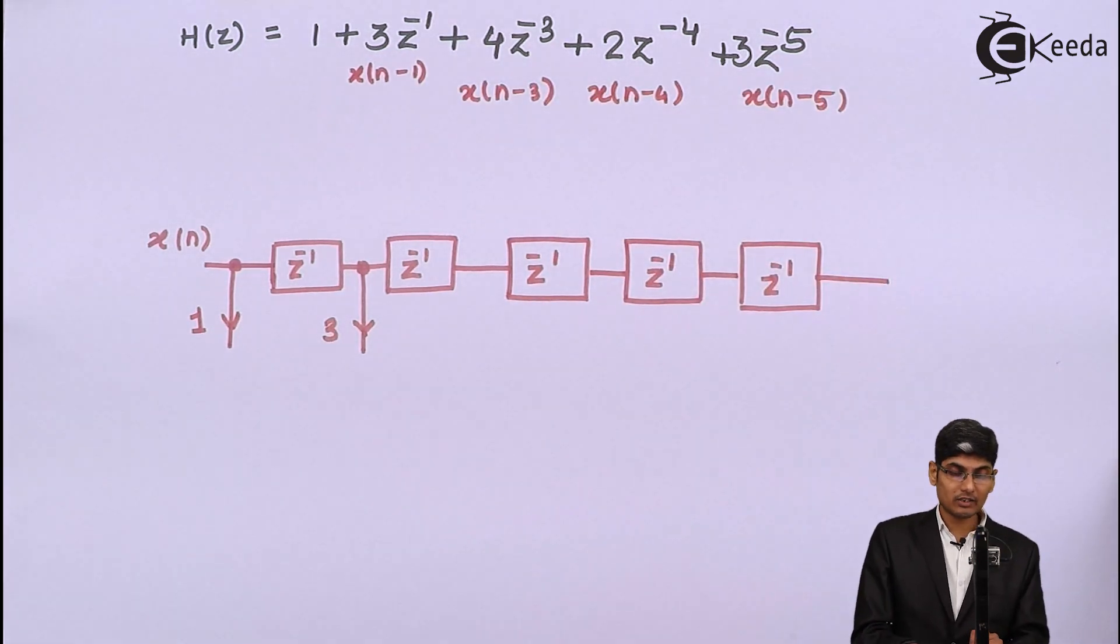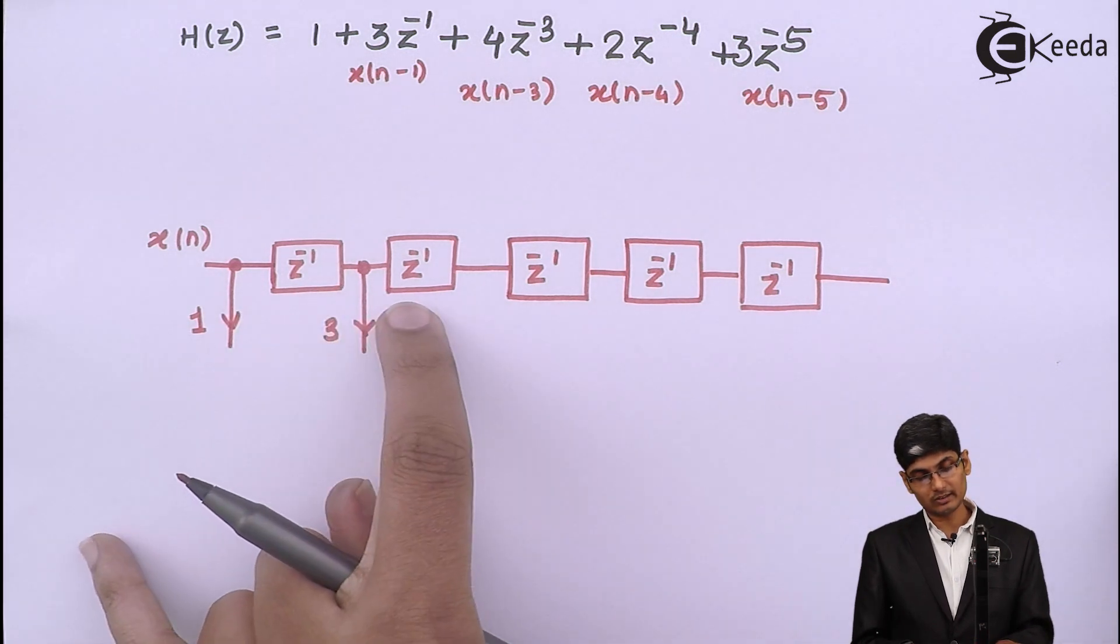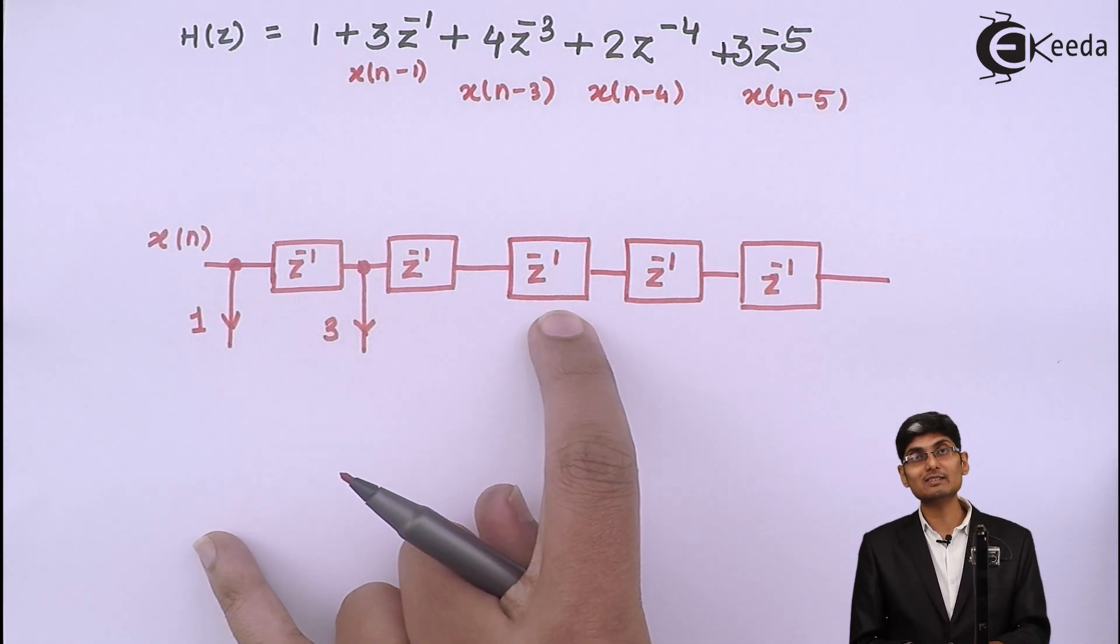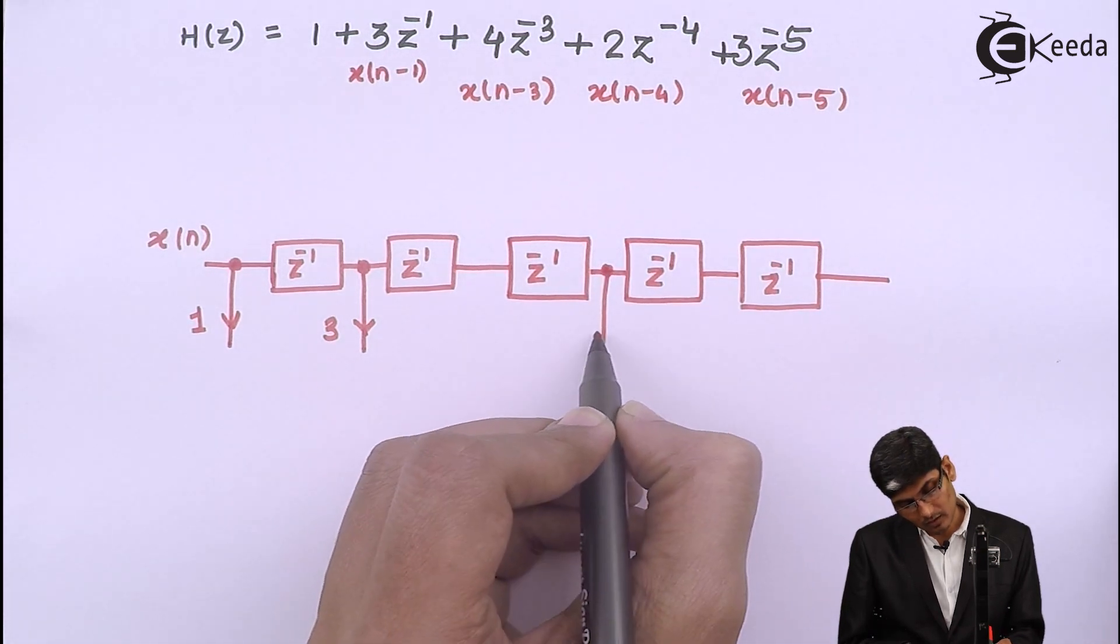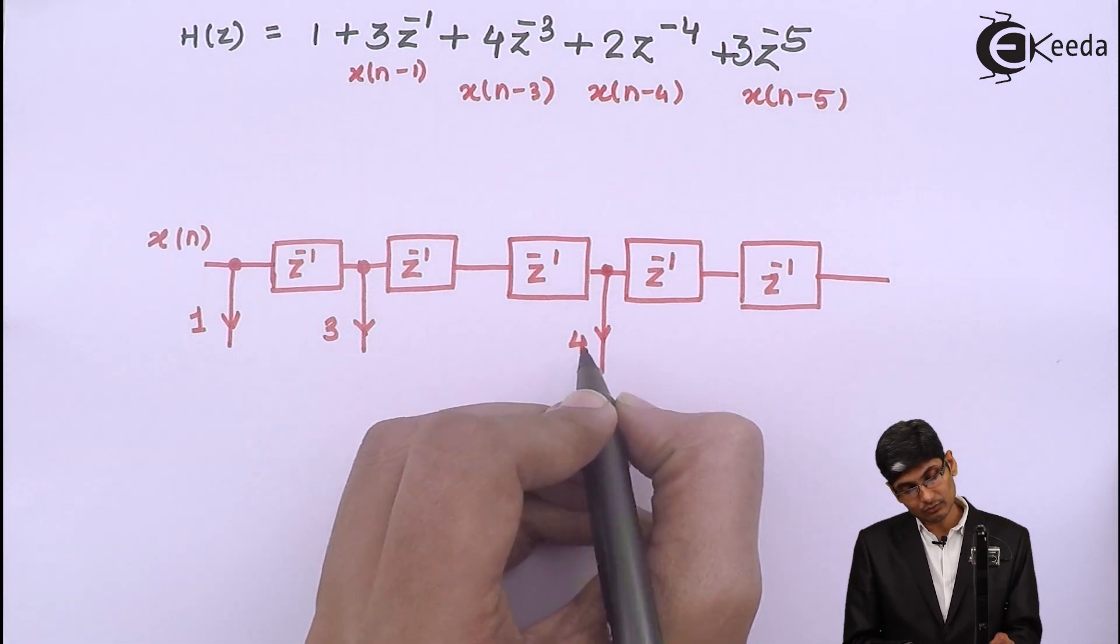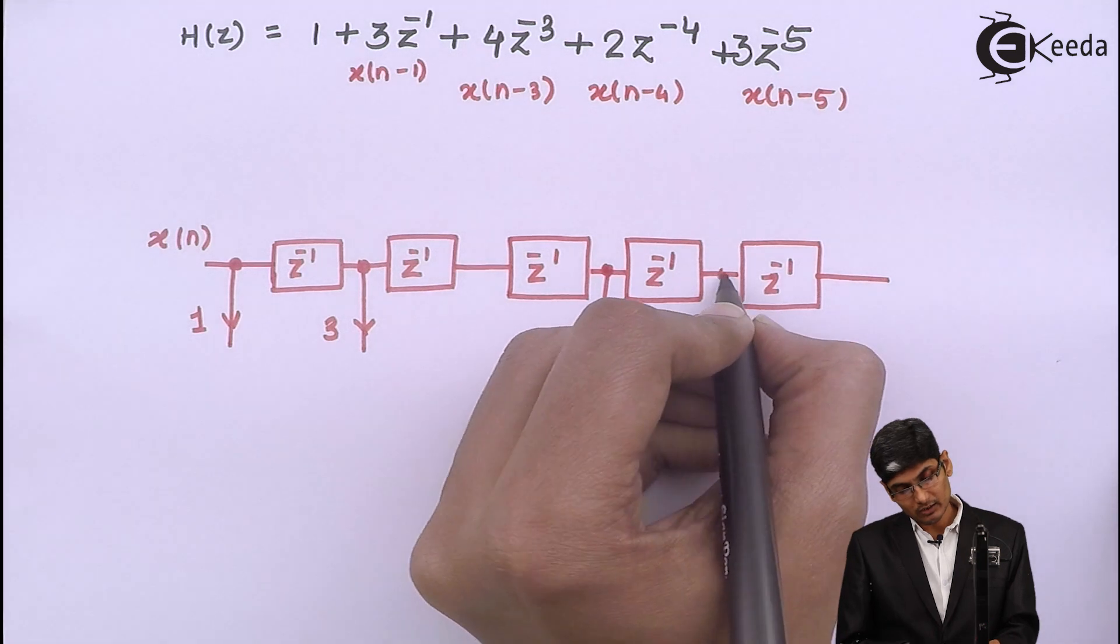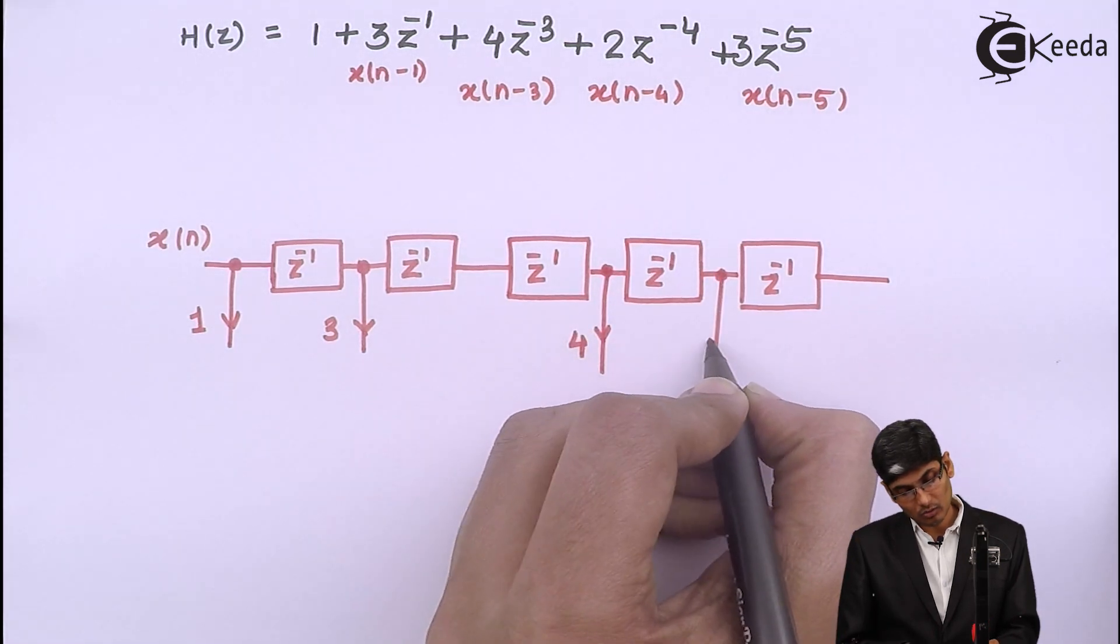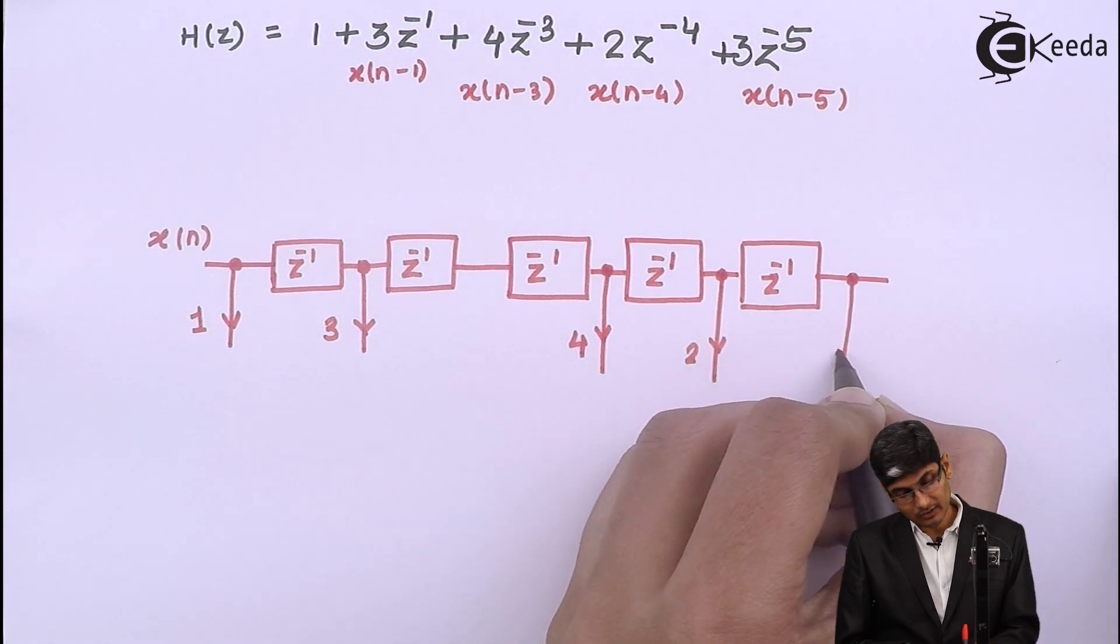Then we have z^-3. So this is z^-1. This is z^-2. This is z^-3. So after z^-3, there is a tap which is having a multiplying factor of 4 or a gain factor of 4. Then we have z^-4 with a multiplying factor of 2. And finally, we have a multiplying factor of 3.